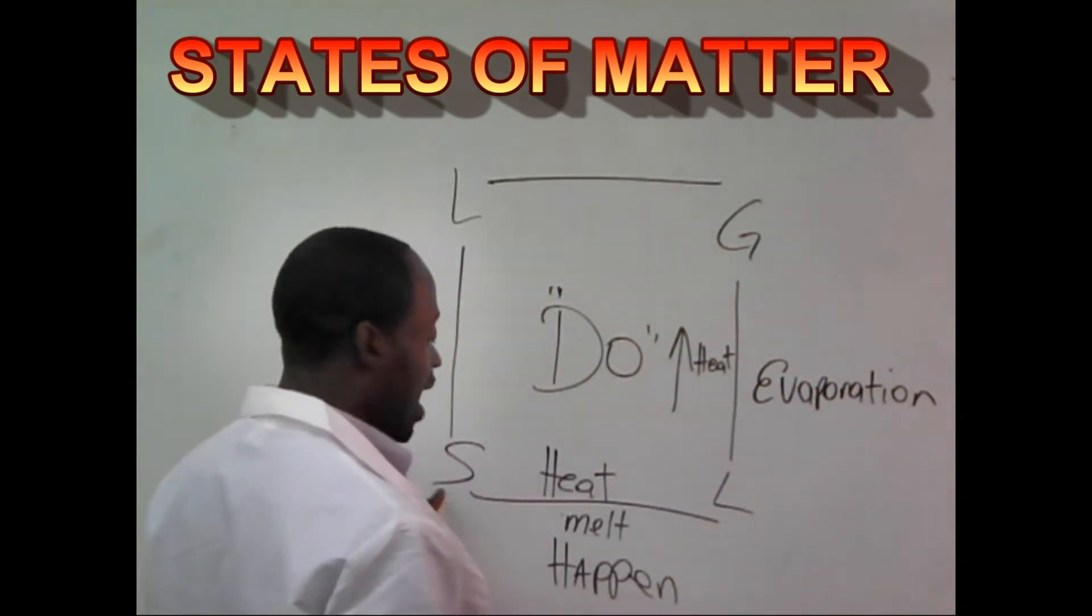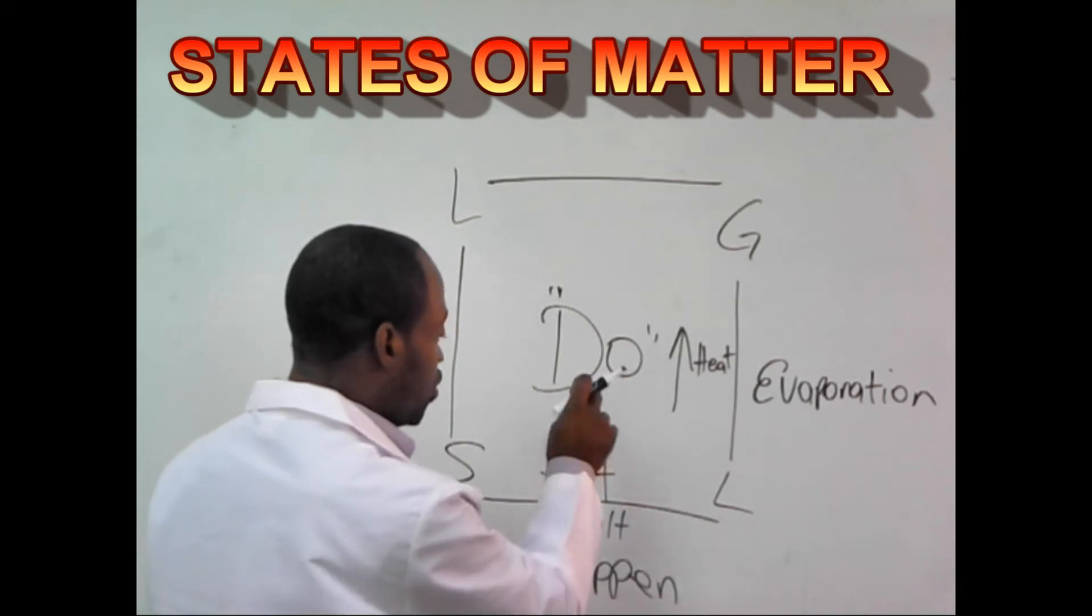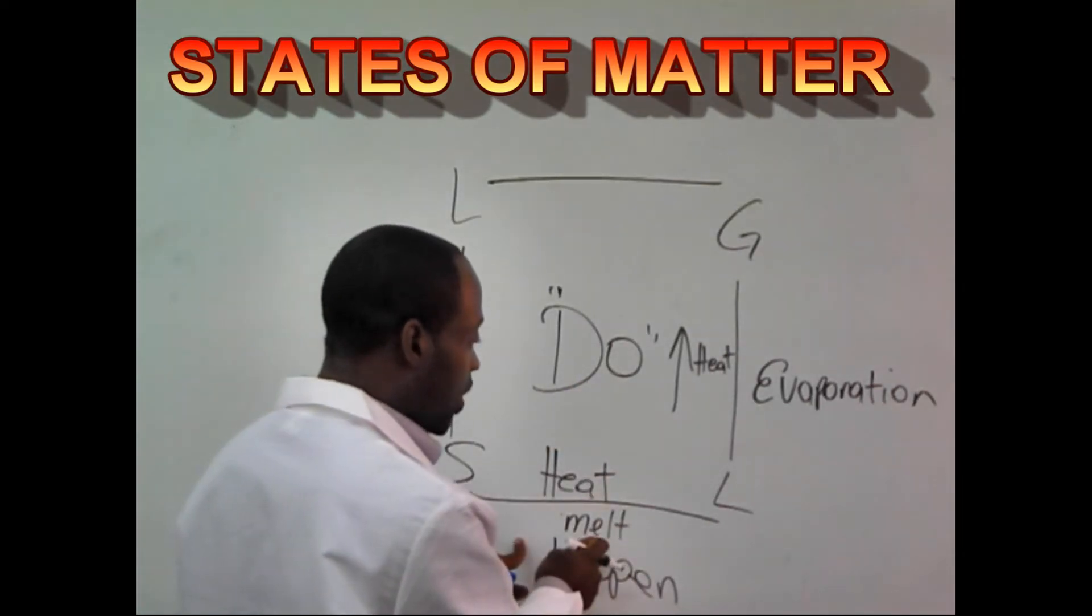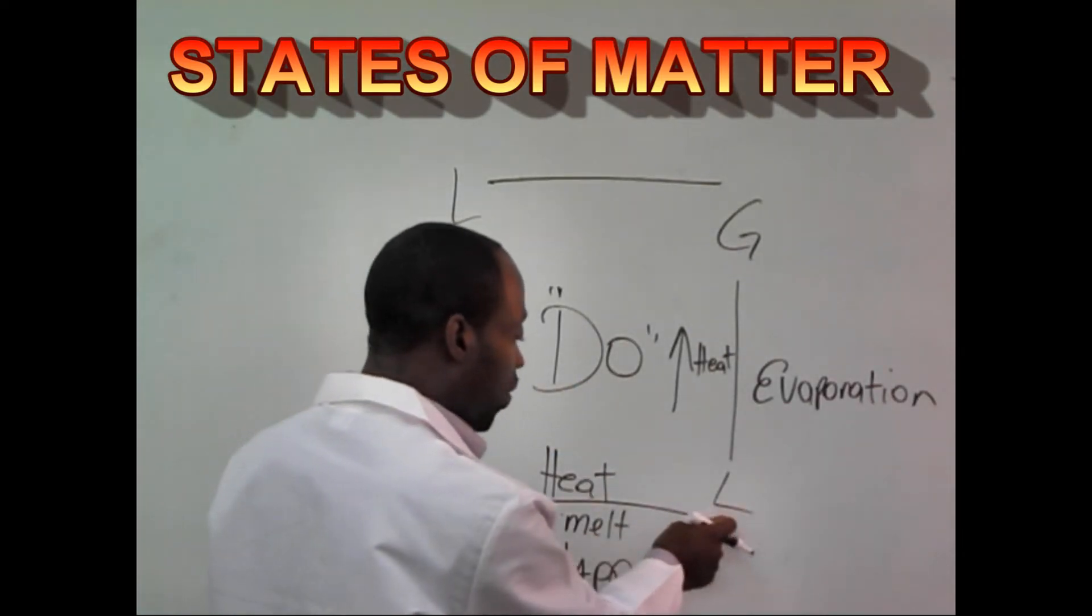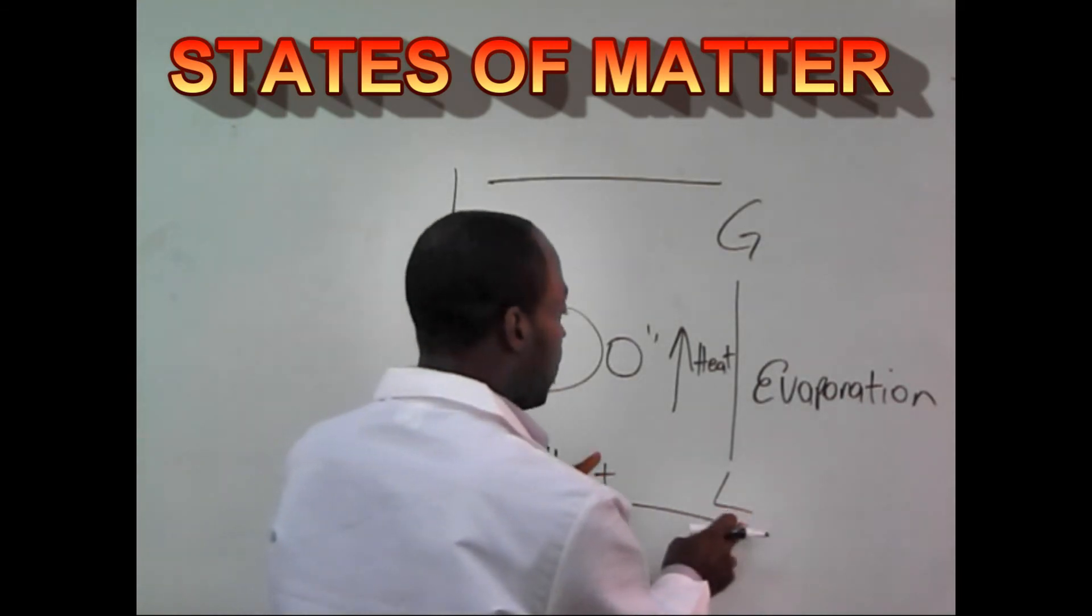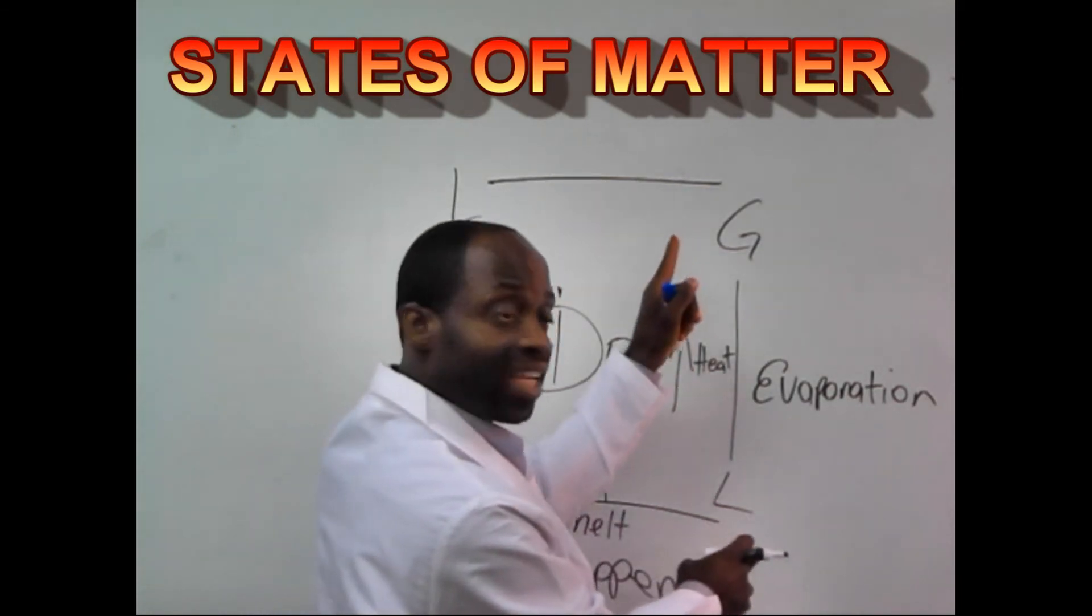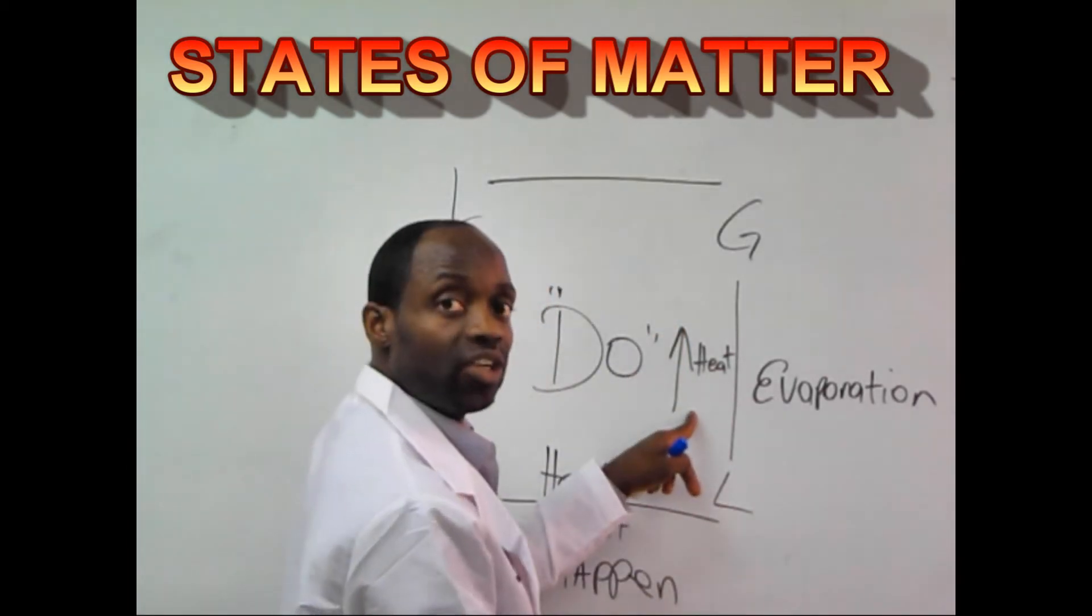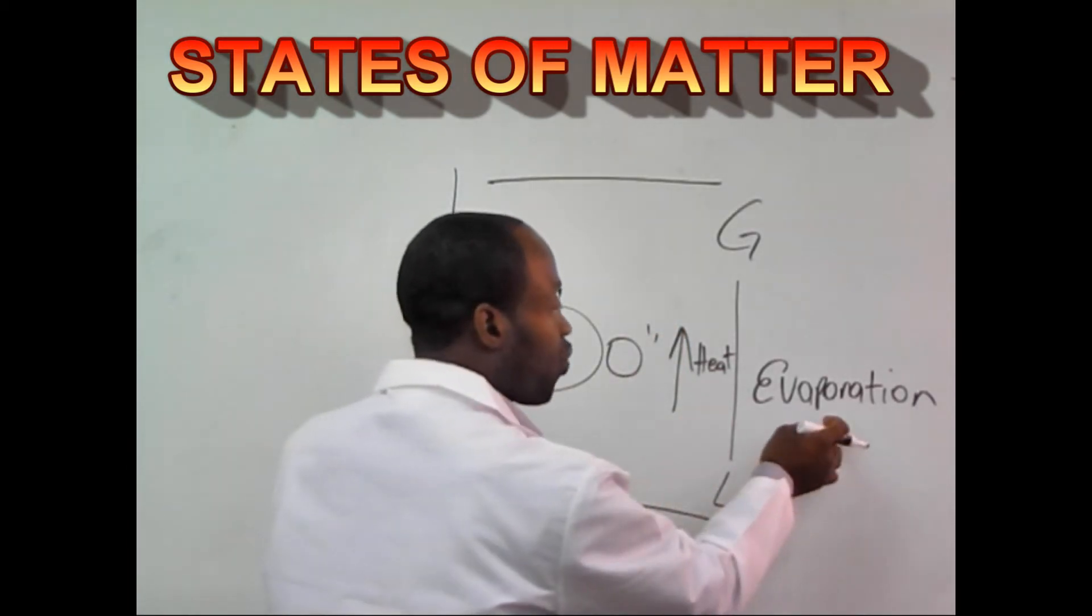Let's recap. I have a block of ice. When I do heat, melt happens. I have liquid now, because I left from the solid state, I'm now in liquid. If I have a liquid, in order for me to turn it into a gas, I have to do heat or increase the heat, evaporation happens.